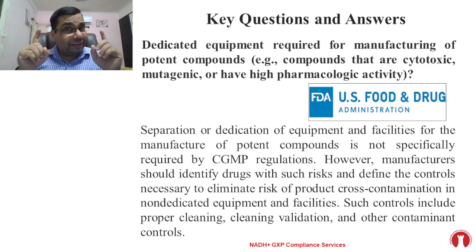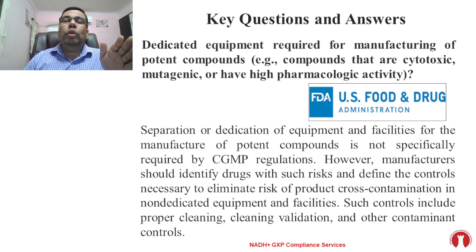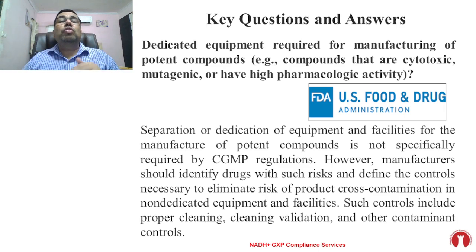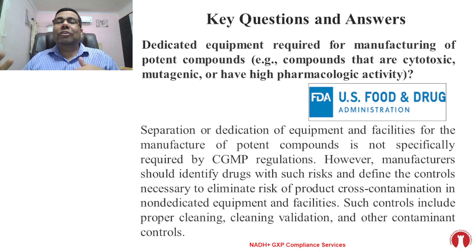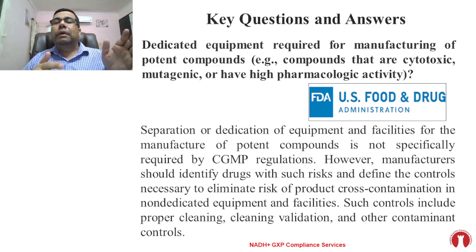However — and here is the key point — manufacturers should identify drugs with such a risk and define the controls necessary to eliminate the risk of product cross-contamination in non-dedicated equipment and facilities. So companies should perform a risk assessment and identify the different risks, because you are going to manufacture the potent molecule in a shared facility. You need to put controls to manage cross-contamination, and such controls include proper cleaning, cleaning validation, and other contaminant controls.